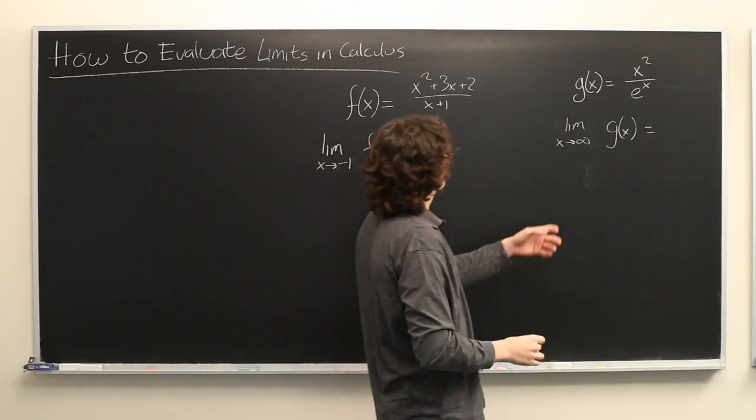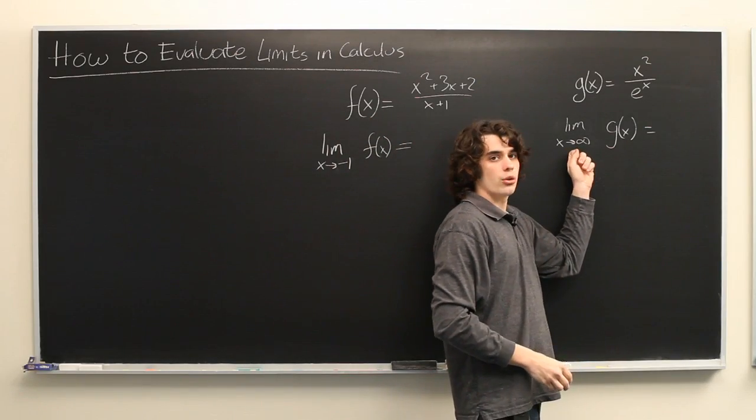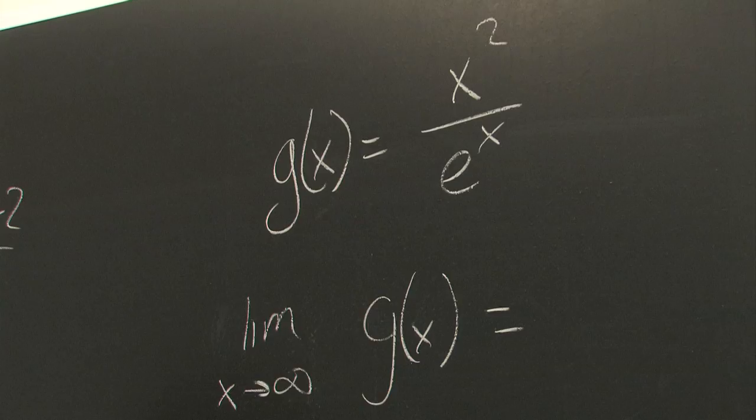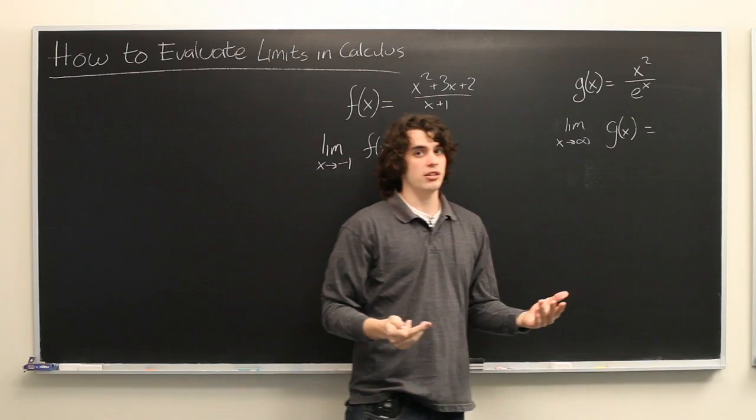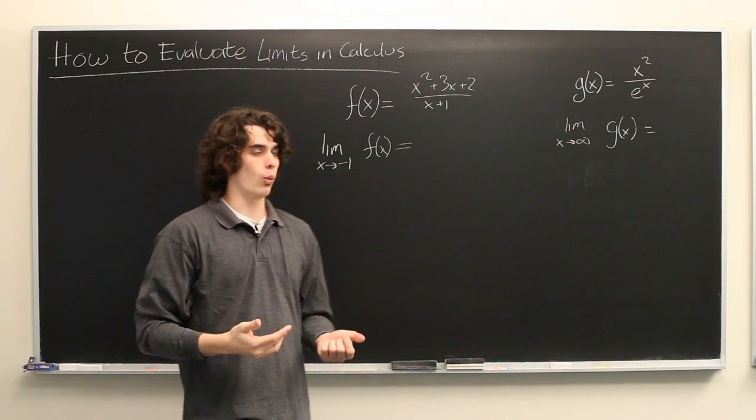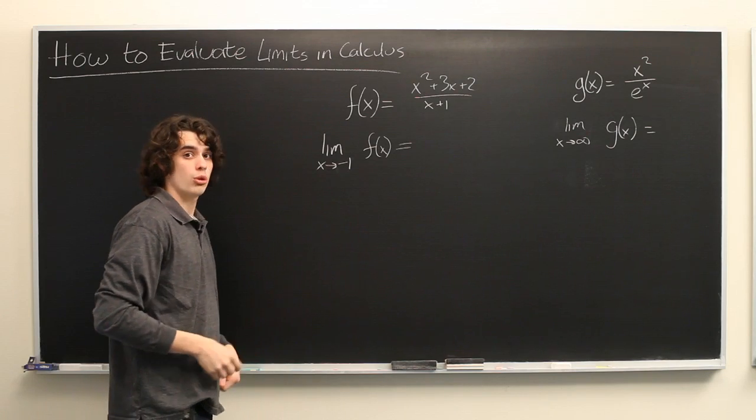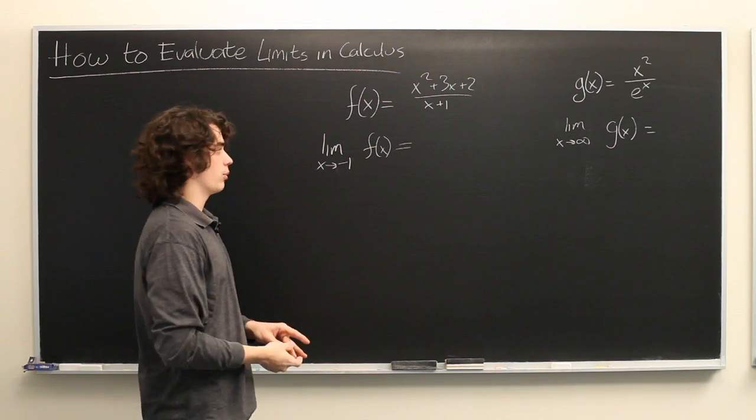The other problem is when x goes towards positive or negative infinity, which frequently results in infinity over infinity, an indeterminate form. It's not clear what value that actually means. So we'll discuss two common tricks for how to evaluate limits with this sort of issue.